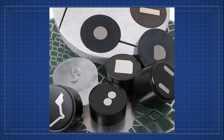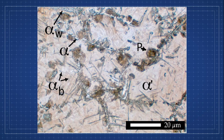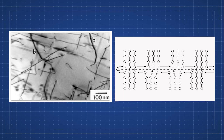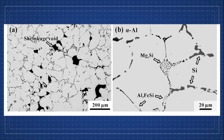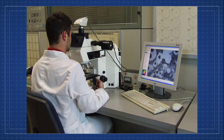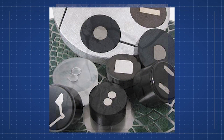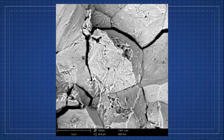Metallographic techniques permit the examination of the microstructure of engineering materials. The microstructure may consist of various phases, grains, grain boundaries, dislocations, fibers, particles, voids, cracks, etc. Since mechanical properties are determined by the microstructure, metallography is a valuable tool in analyzing novel materials and in determining the cause of failures of structures.